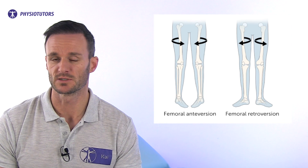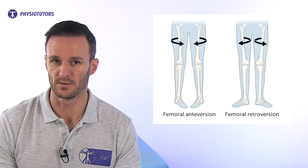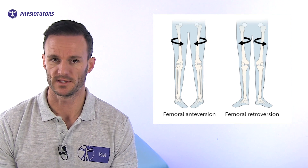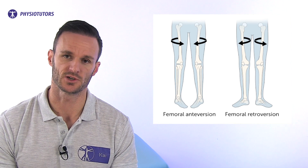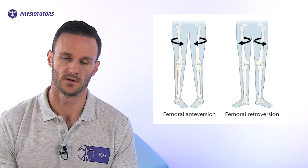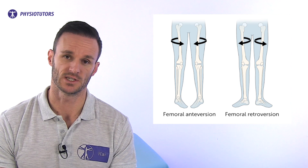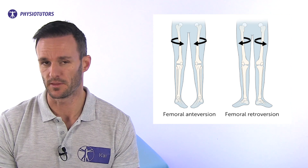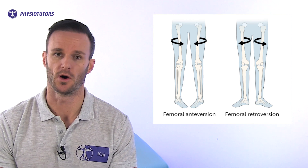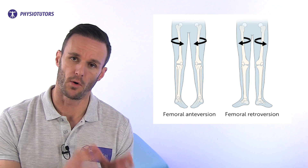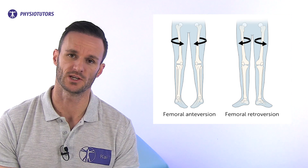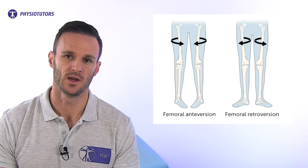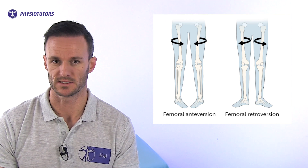Anteversion is more common in females, who on average have a wider pelvis and a larger Q angle. For patients with a retroverted hip, this is usually the other way around — they have more external rotation than internal rotation and a tendency to have bow legs.